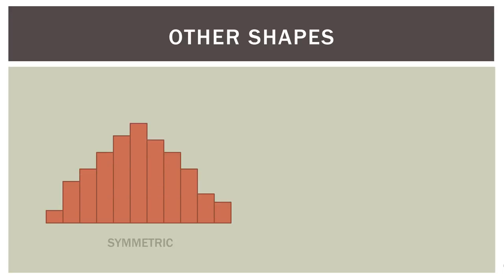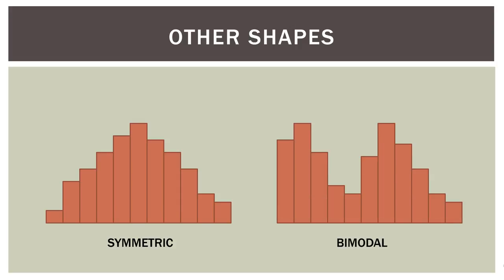There are also other shapes. We can have a symmetric distribution — this looks like what you may have heard of as the normal distribution. There are approximately as many observations on one side of the histogram as on the other. We have another called bimodal — it kind of looks like a camel, with two or more distinct peaks or humps in the histogram. You can see a peak on the left and a peak on the right. So we have four distinct shapes: skew left, skew right, symmetric, and bimodal.